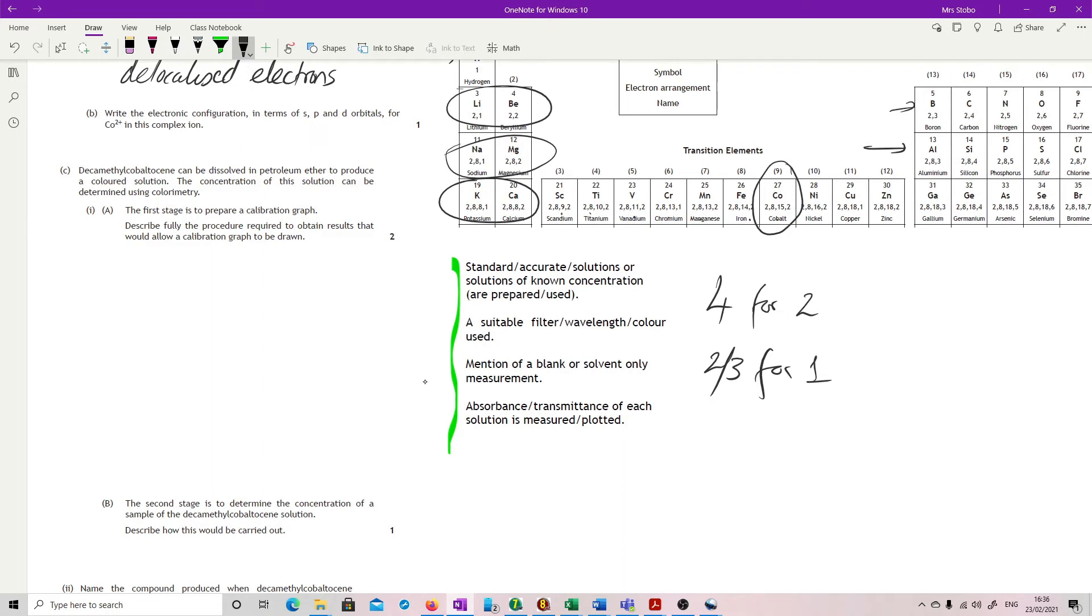The second stage is to determine the concentration of a sample. Describe how this would be carried out. Now that's a little bit simpler, but it's still going to be 2 parts of this to get the 1 mark. So you're going to have to basically take the measurement, and that's going to be either absorption or transmission, depending on what you'd set up.